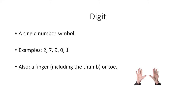Let's talk about numbers and the word digit. A digit is just a single number symbol, like 2, 7, 9, 0, 1 — all of these are digits. It's also the word for finger, thumb, or toe, and this comes from the fact that when you're counting you usually start by using your fingers.